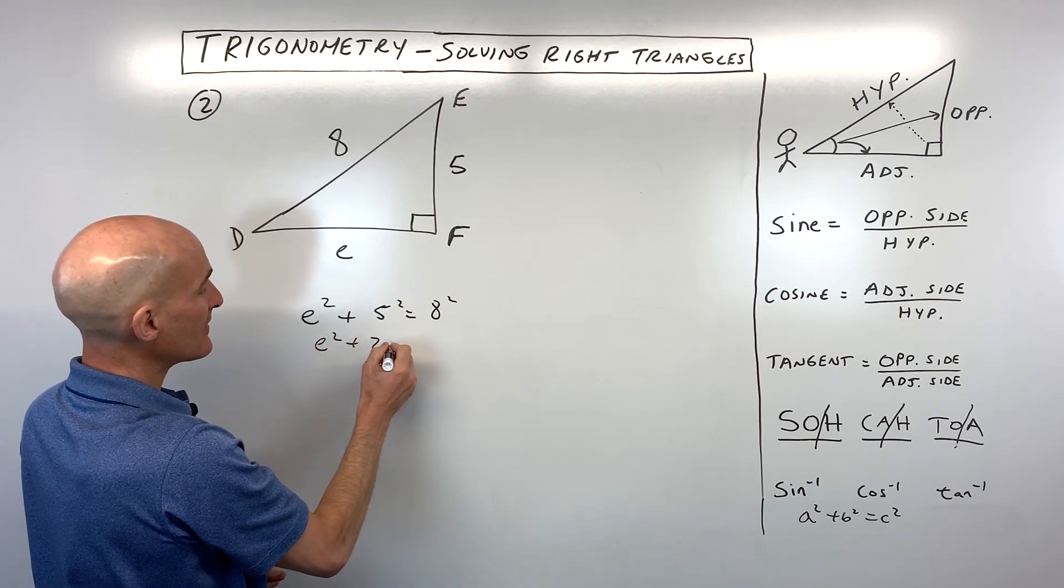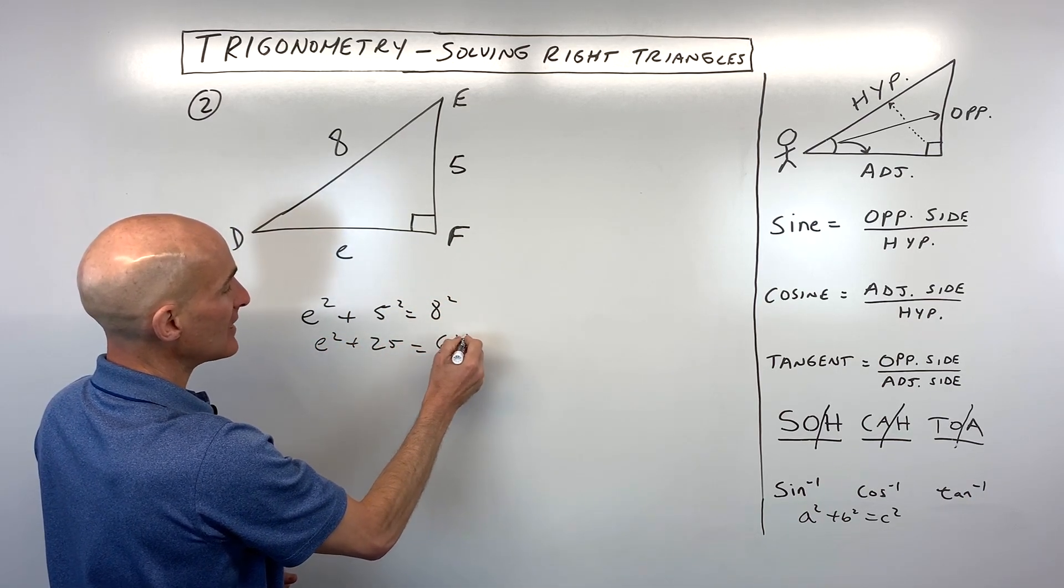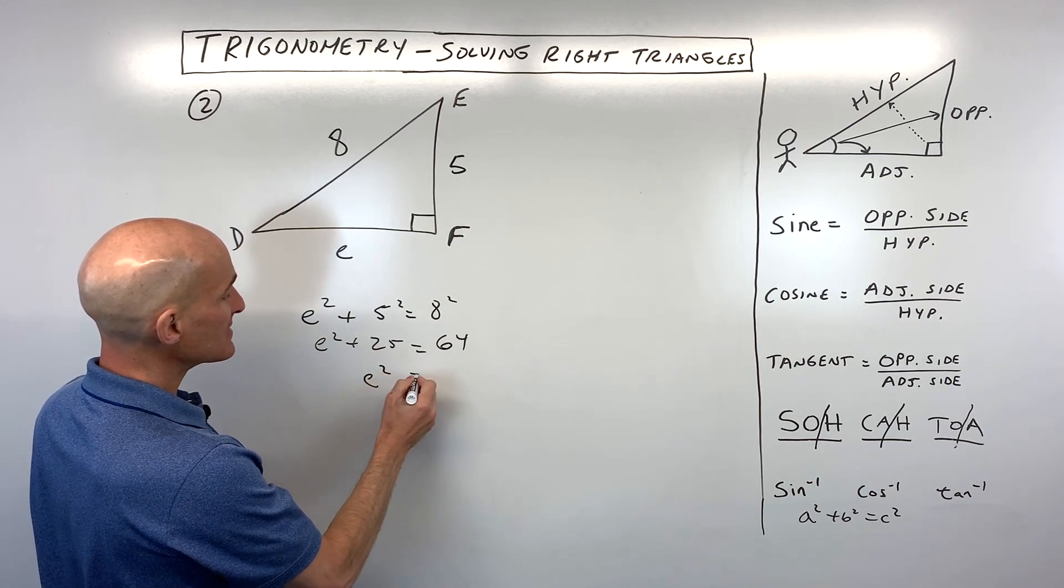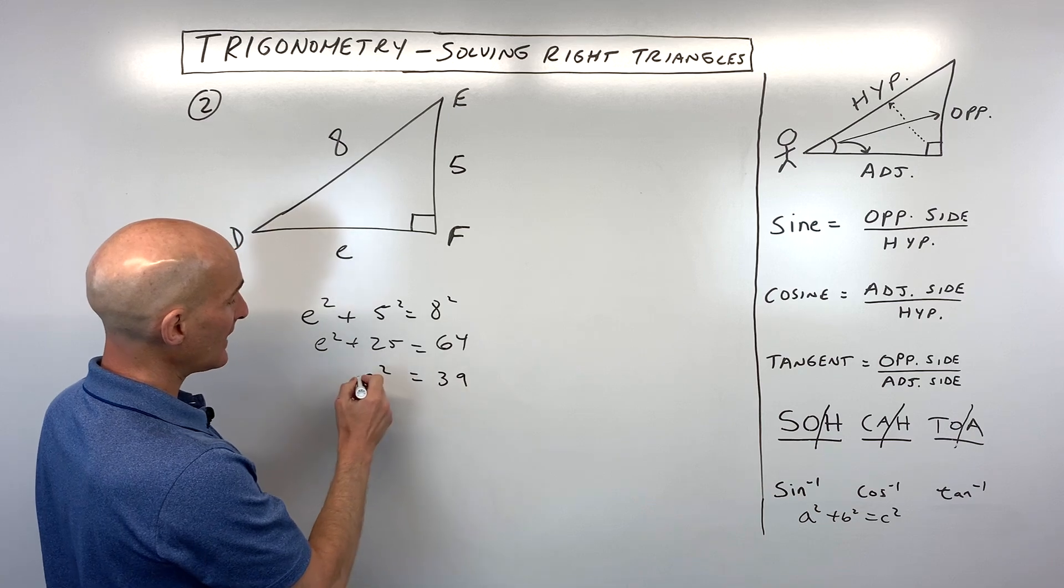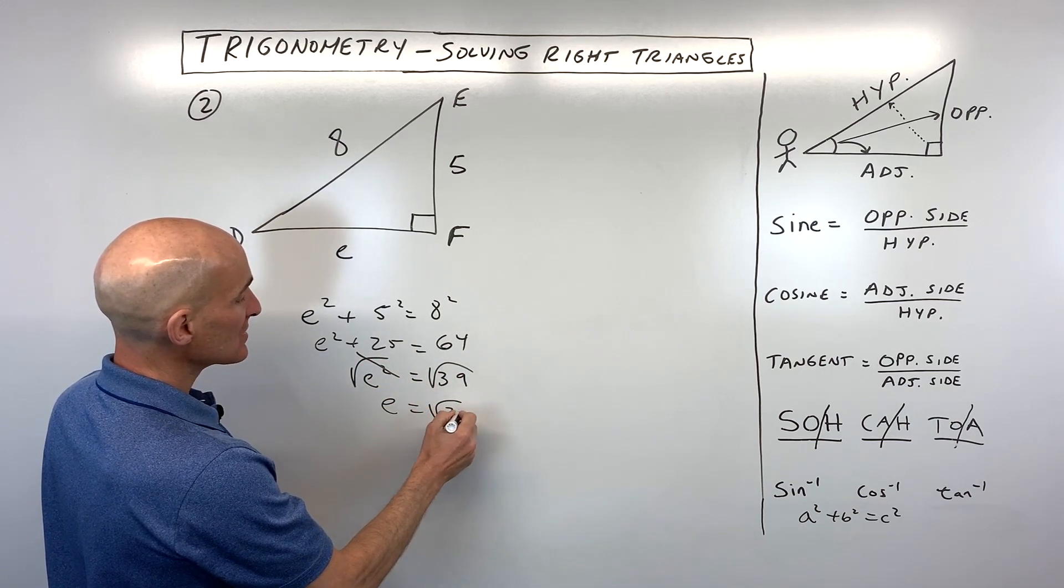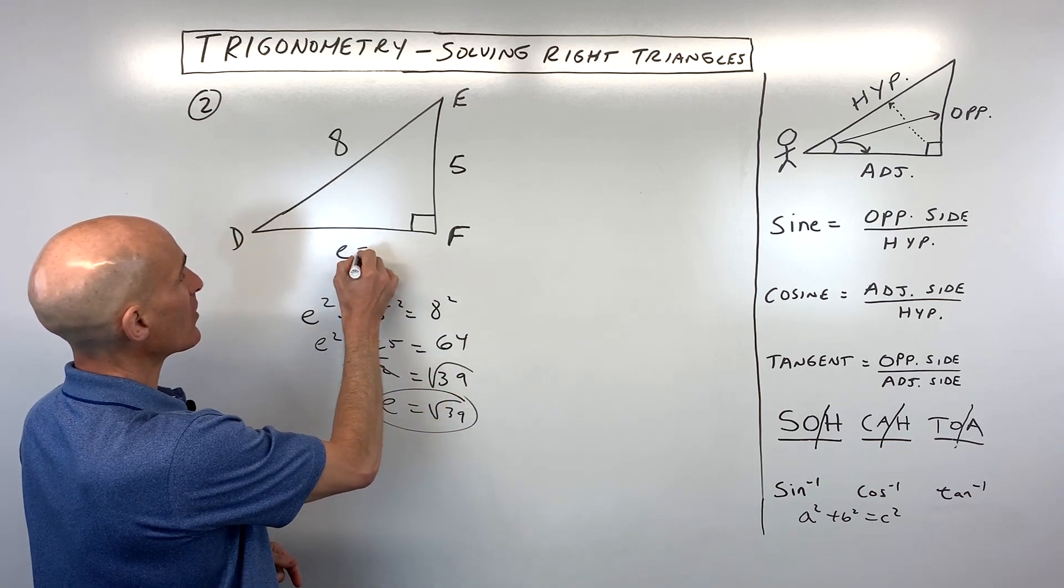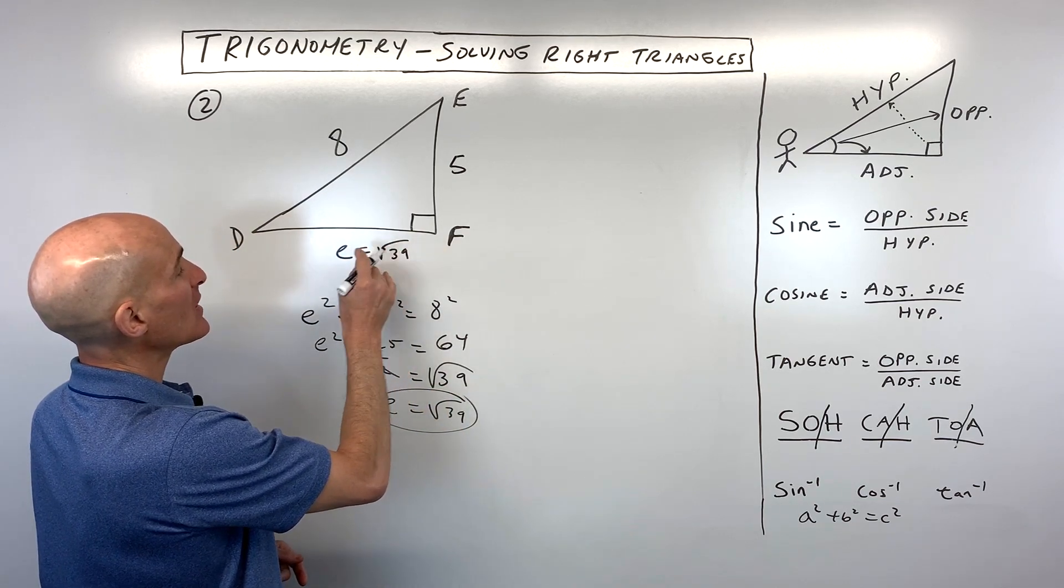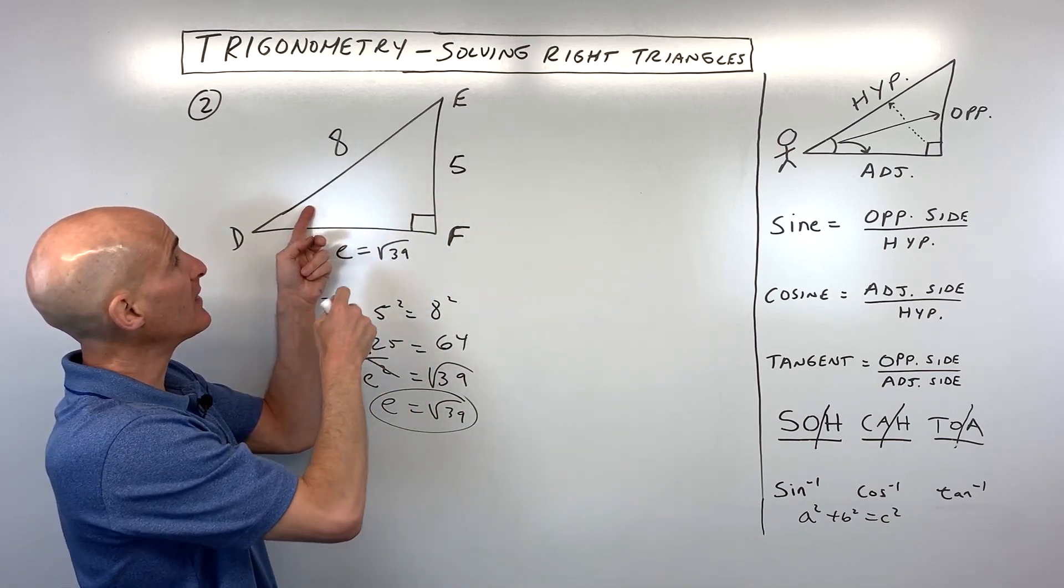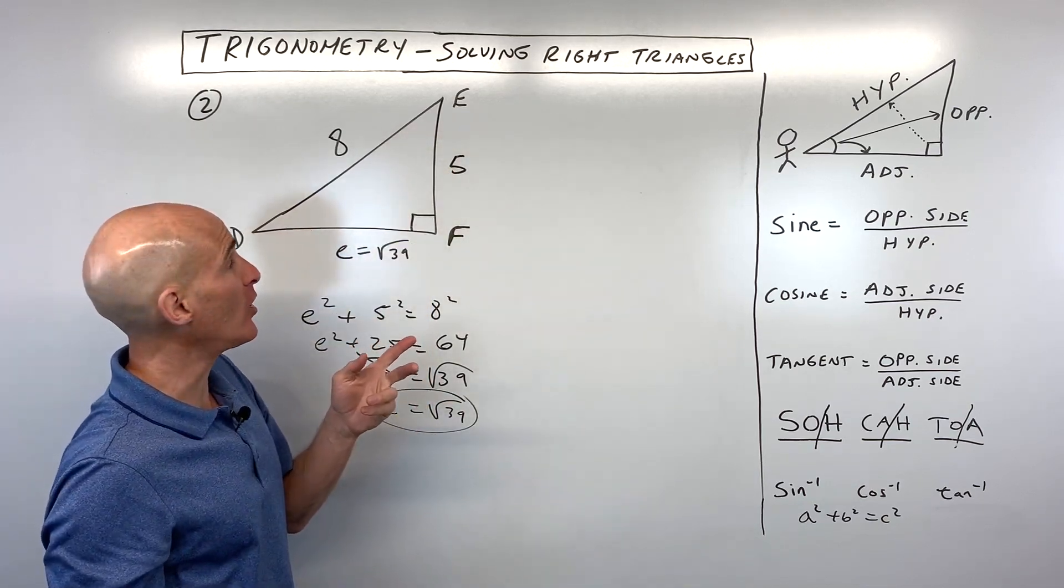E squared plus 5 squared is 5 times 5, which is 25. 8 squared is 8 times 8, which is 64. If we subtract 25 from both sides of the equation, we get 39. And if we take the square root to get that E by itself, we just get an exact answer here of square root of 39. So now we found all the sides. Now we just have to find these two acute angles. Of course, if we find one, we could just subtract from 90 to find the other one.